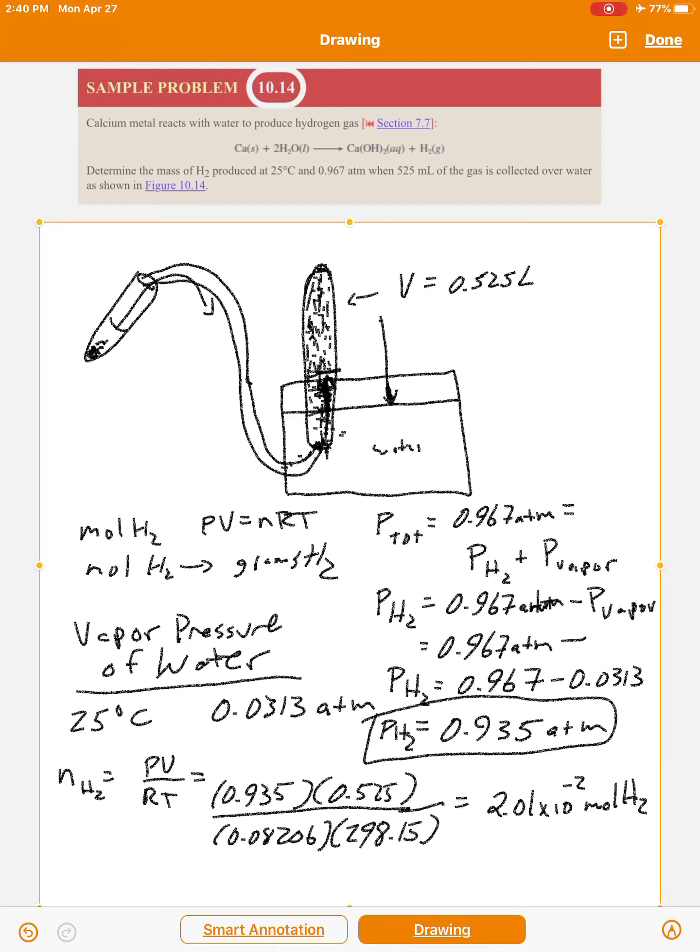Okay, now if we want to convert that to grams. Hydrogen is 2.02 grams per mole. That's the molar mass.